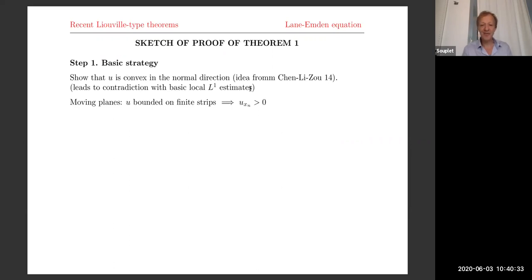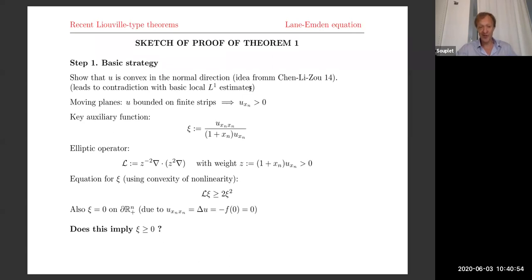The first step is to use moving planes in the usual way — it tells you that if you take a solution bounded on finite strips, it has to have a positive derivative in the x_n direction. Then we use a key auxiliary function whose idea also comes from Chen-Li-Zhao. It's reminiscent of auxiliary functions used in dynamical systems and second order ODEs, except now in the PDE context. It's U double prime — prime means normal derivative — divided by (1 + x_n · U prime).